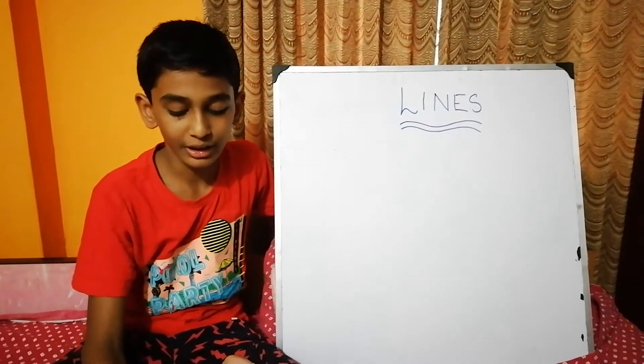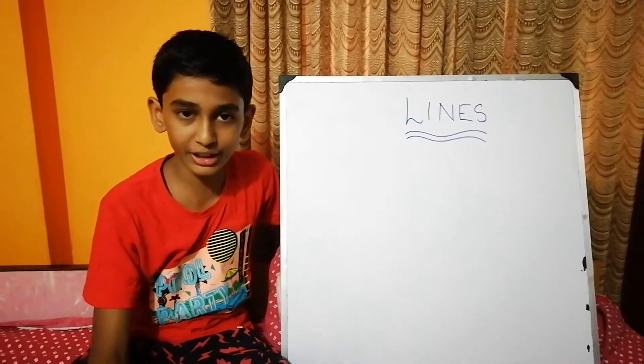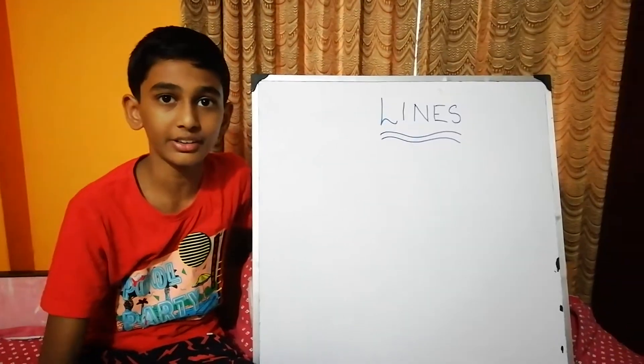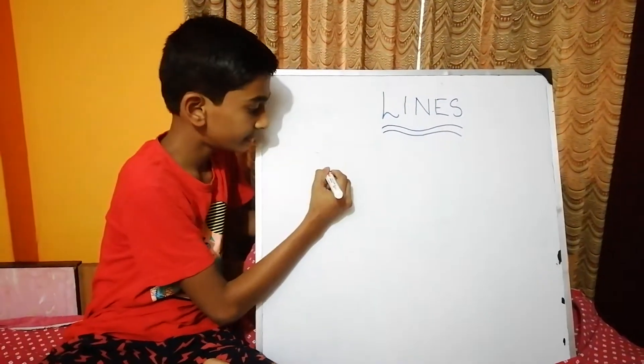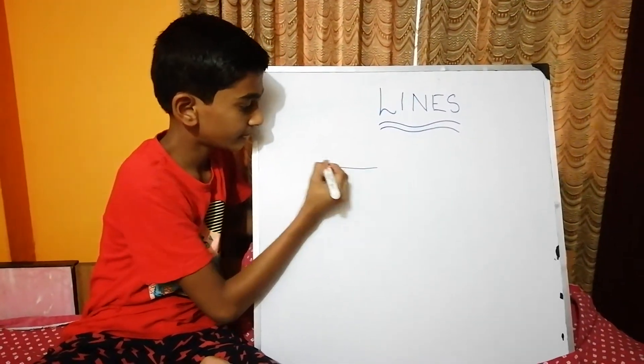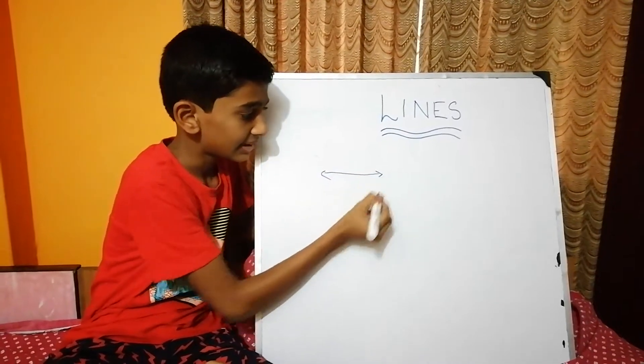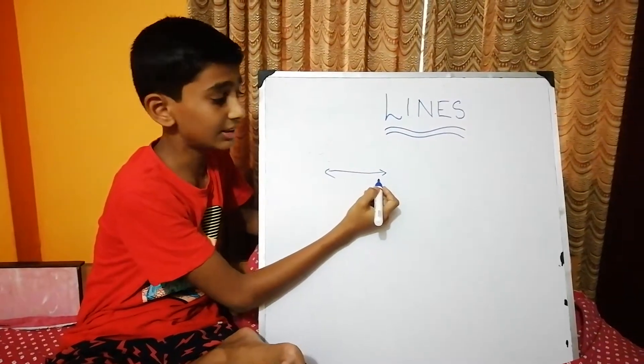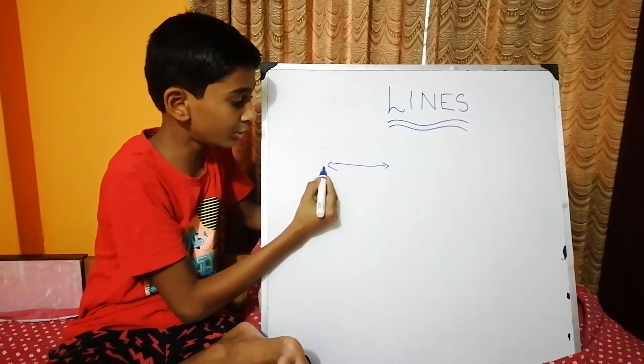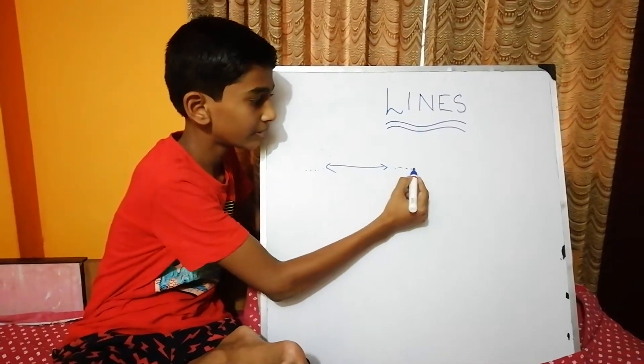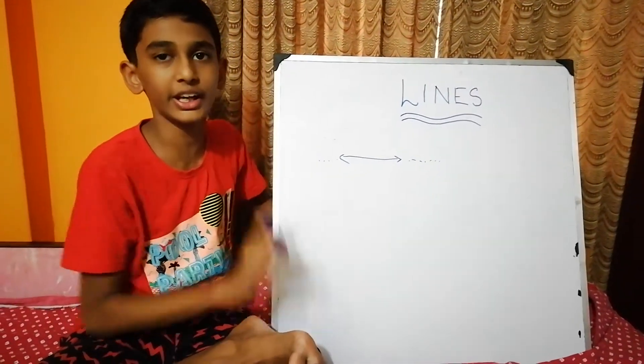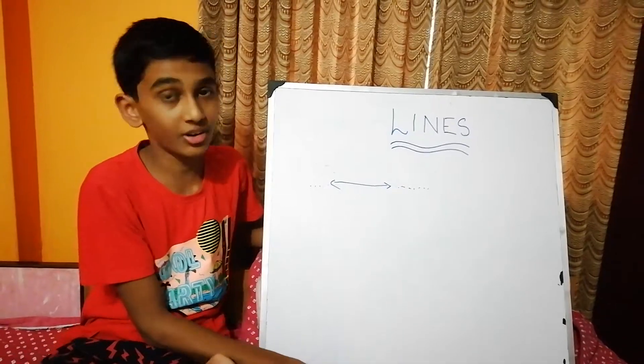Line is extended by two directions. For example, this line is extended in two directions without any end. This is called lines.